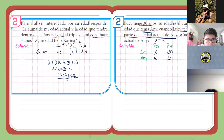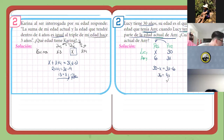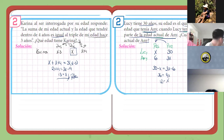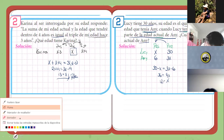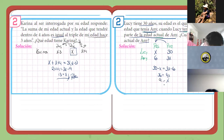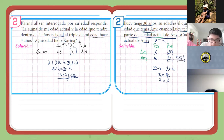Recuerden que esta diferencia de años tiene que ser lo mismo. Por lo tanto, sería 30 menos x igual a 3x menos 6. Resolviendo: 4x es igual a 36, por lo tanto x es igual a 9. Nos preguntan: ¿cuál es la edad actual de Aini? La edad actual de Aini sería 3 por 9, que vendría a ser 27. Esta es su edad actual.